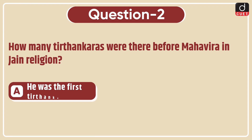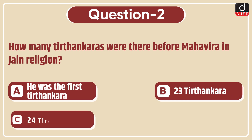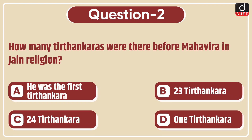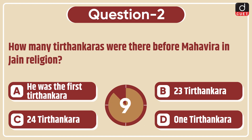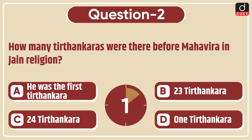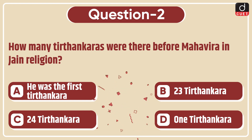Next question: How many Tirthankaras were there before Mahavir in Jain religion — was he the first Tirthankara, were there 23 Tirthankaras, 24 Tirthankaras, or 1 Tirthankara before him? The correct answer is option B, 23 Tirthankaras.